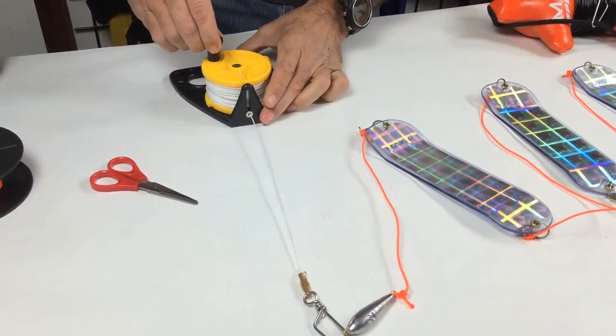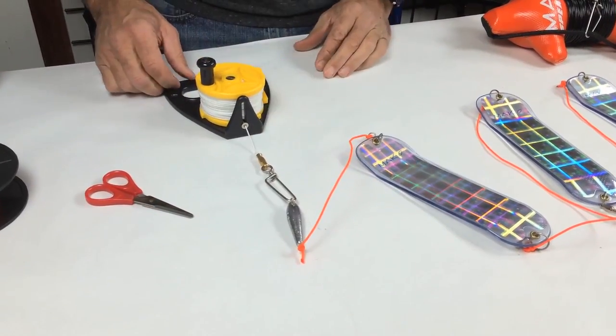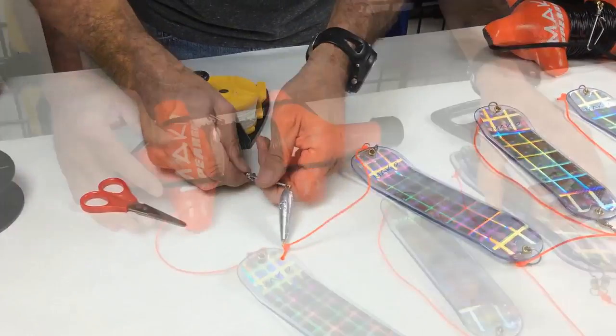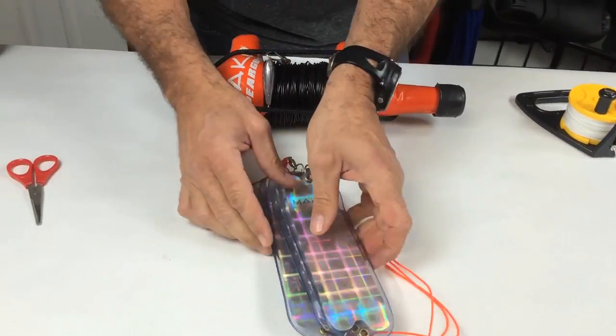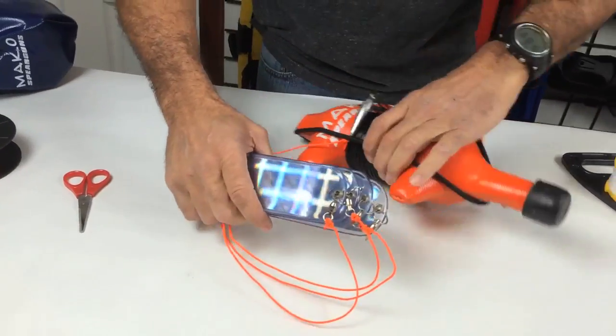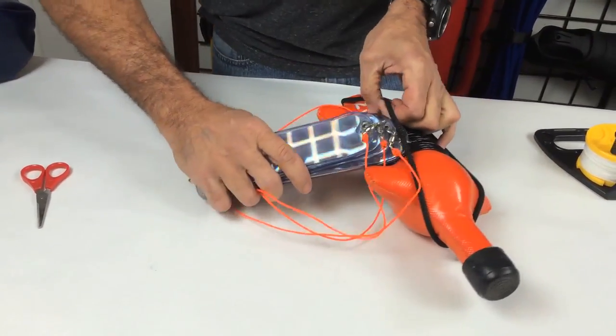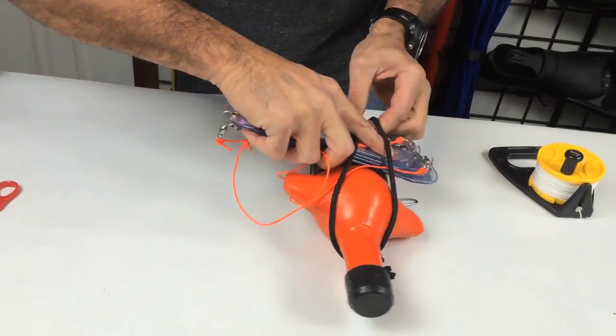For easy let out and retrieval, hook your string of flashers to the utility reel and you're ready to go. Or check out the flasher float that not only makes let out and retrieval a snap but also makes it easy to store your flasher rig when not in use.